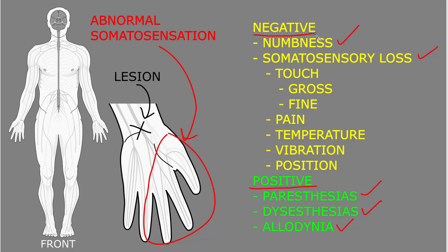This distinction can be helpful clinically. Negative somatosensory abnormalities can be seen with dysfunction in peripheral somatosensory axons or with lesions in the central nervous system — either location can produce them. The same is true for positive somatosensory abnormalities; however, these tend to occur much more often with peripheral lesions and much less often with central nervous system lesions. So while it is not a perfect way to distinguish between central and peripheral lesions, the presence of positive somatosensory abnormalities does add evidence pointing toward a peripheral nervous system lesion.